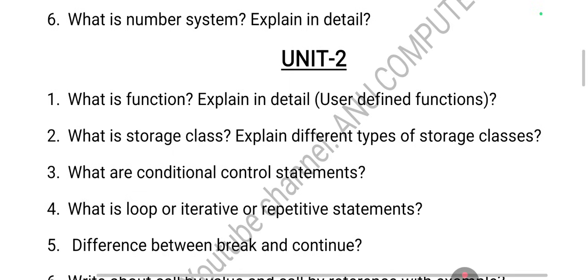Break and continue are called unconditional jumping statements and can be used with both switch and loops. Break causes the program to jump from inside the loop to outside and not continue. Continue ignores only the current iteration's remaining statements and proceeds with the next iteration.